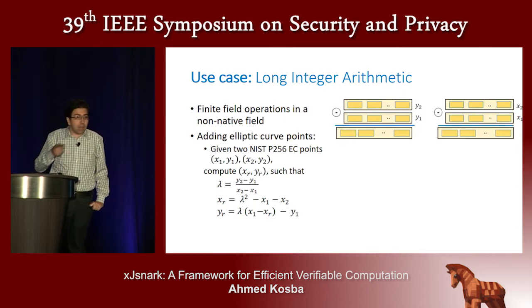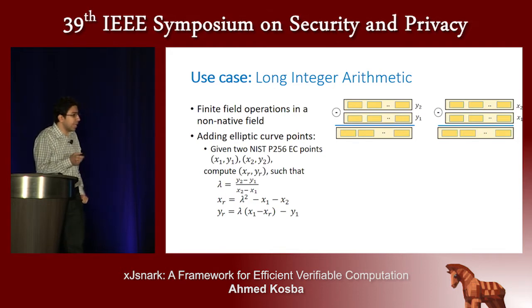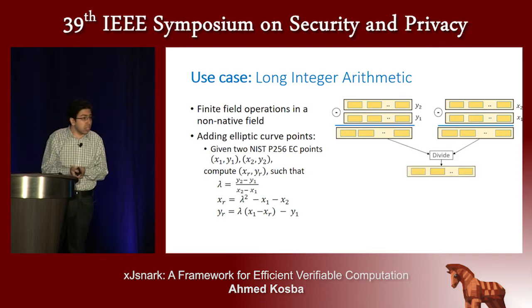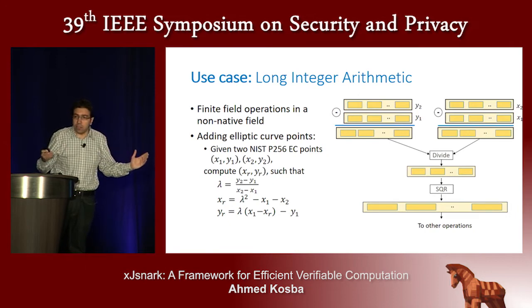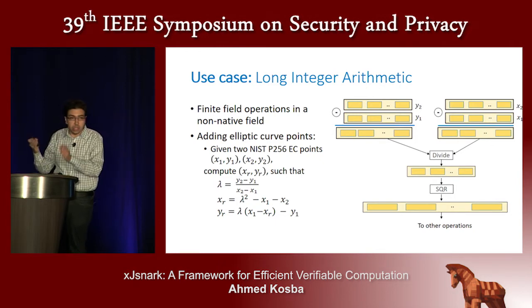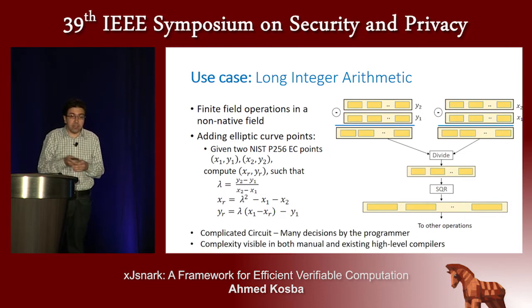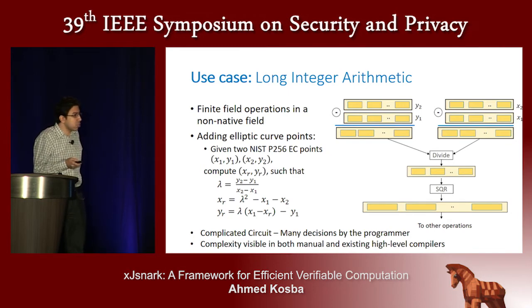The programmer will also have to implement subtraction manually, which typically involves adding auxiliary constants chosen very carefully. Then there is a division operation done manually as well, requiring knowledge of non-determinism to write it securely. Multiplication will later increase the bit width of these elements, and the programmer must decide when to reduce them. As we can see, this is a very complicated circuit, and the complexity is visible in both low-level and high-level implementations.